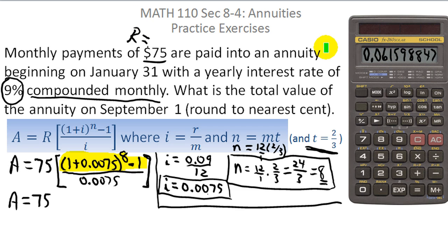So I take the calculator displayed value and do divided by 0.0075 equal, giving me 8.213179708. So again, looking back at the formula, what's in the calculator display is the entire fraction that's being multiplied by 75.